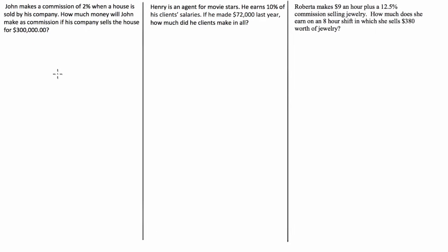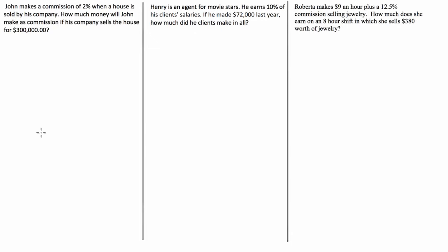G'day guys, I've got a couple of questions for you today on commission. Commission is a payment made from an employer to an employee to incentivise the employee to be more productive at work. It's usually paid as a fraction or percentage of the value of product that the employee sells. Commission is usually paid to salespeople like real estate agents or people who work in consumer electronics stores. Basically, the employee sells an amount and they get to keep a certain fraction of that.